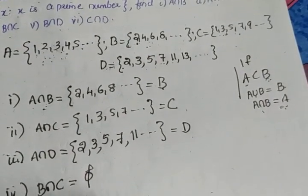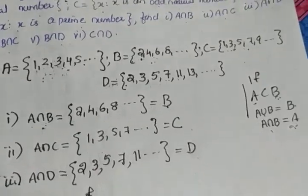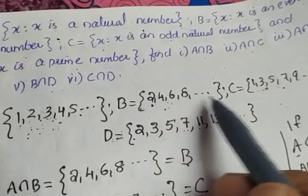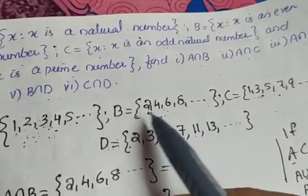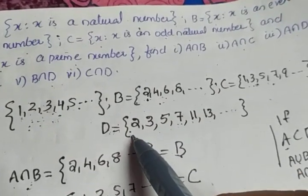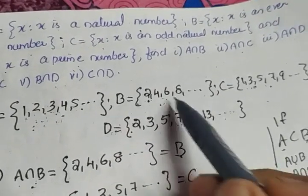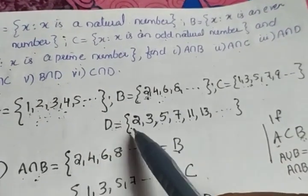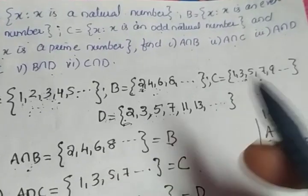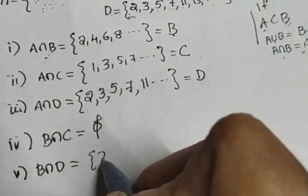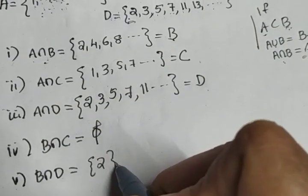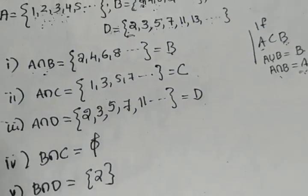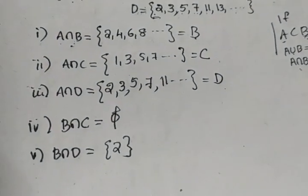Fifth question: B intersection D. B = {2, 4, 6, 8, ...} — even numbers — and D is the set of prime numbers. The only common number is 2, since 2 is the only even prime number and also the smallest prime number. So B intersection D = {2}.